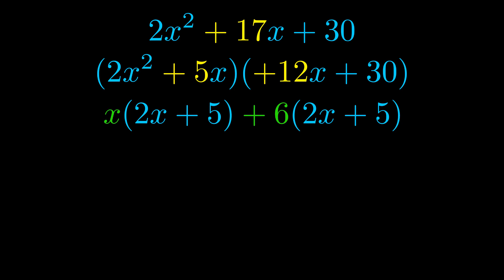Notice also how what remains inside of the parentheses is the same in both cases. The blue values are the same. Those blue values will become one of our factors and we will combine the two green values, the GCFs that we pulled out, to get the other one. And that is our fully factored equation.